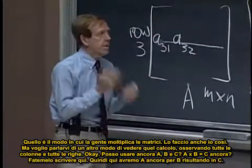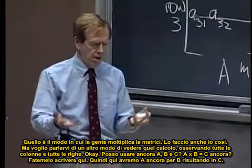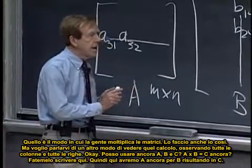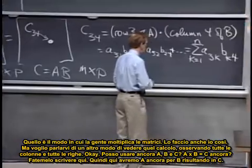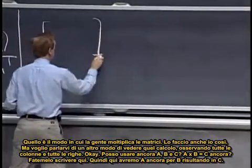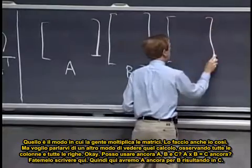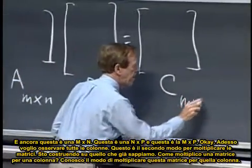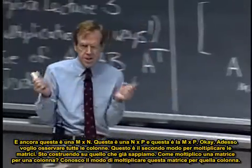I do it too. But I want to talk about other ways to look at that same calculation, looking at whole columns and whole rows. So can I do A, B, C again? A, B equaling C again. But now, tell me about, let me put it up here. So here goes A, again, times B, producing C. And again, this is M by N, this is N by P, and this is M by P. Now I want to look at whole columns. I want to look at the columns of, in fact, here's the second way to multiply matrices.